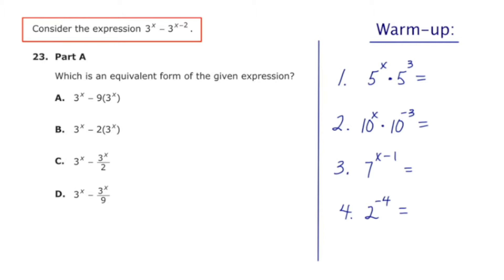Hey there, this is MathCamp321, presenting the solution to question number 23 of the PARC Algebra 2 practice test from school years 2014-2015. In this two-part question, we're asked to consider the expression 3 to the x minus 3 to the x minus 2. And in part A, they're asking us to find a more simplified version of this.